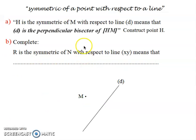The second kind of symmetry is the symmetric of a point with respect to a line. We have a point, and the mirror here is a line. M stands before mirror D, so its symmetry appears on the other side.